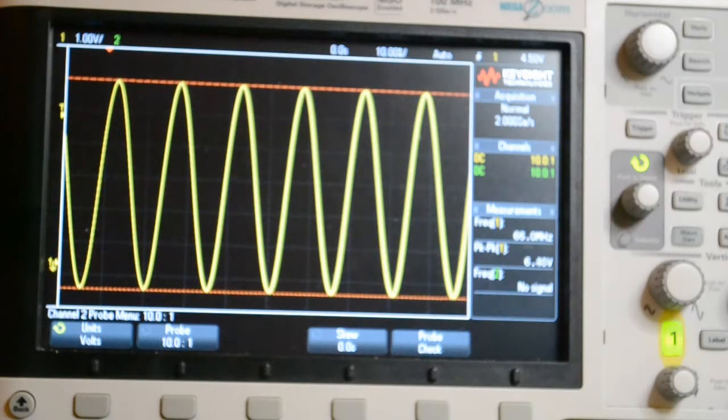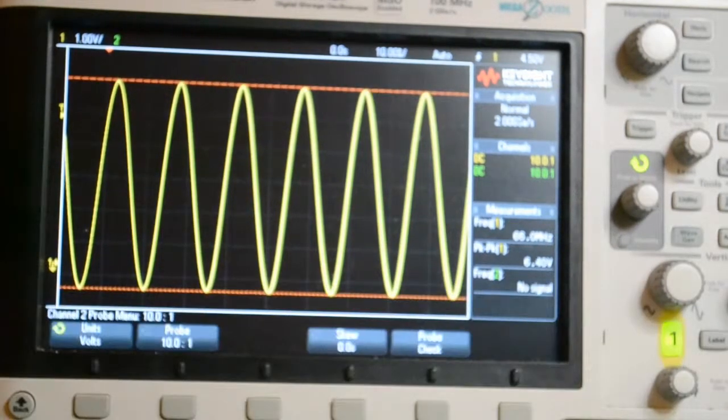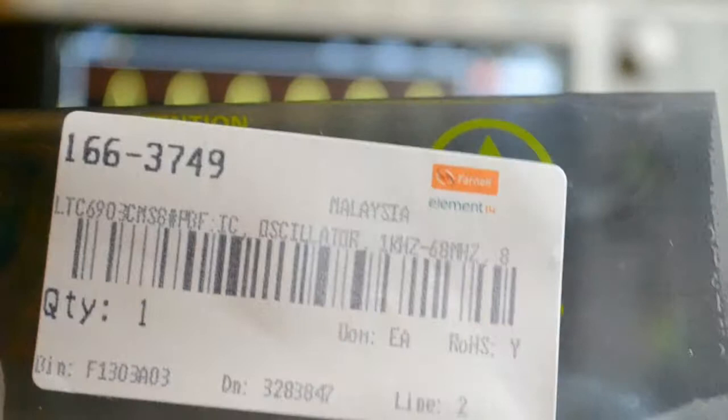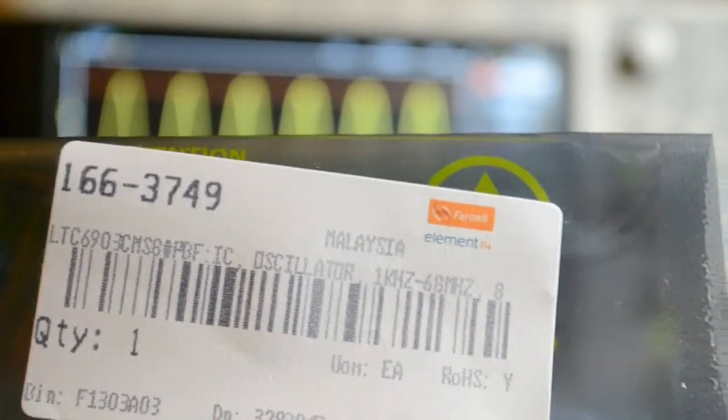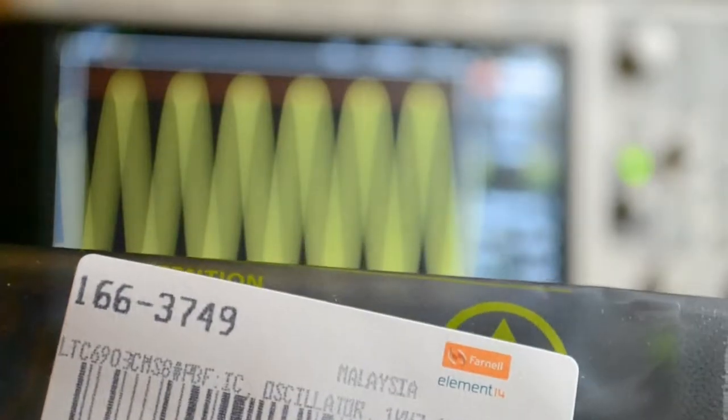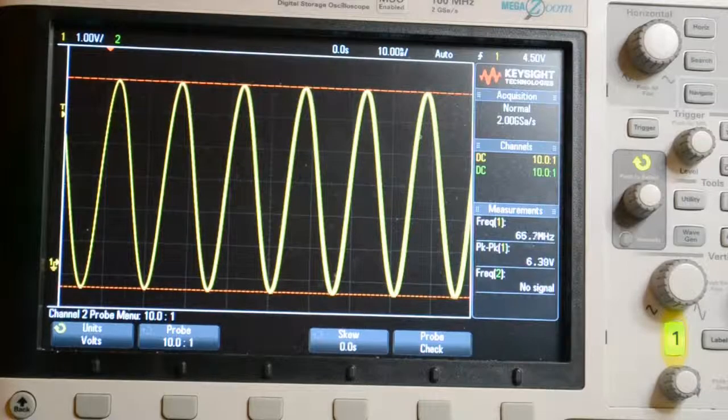Hopefully this has given you some insight into programmable oscillators, and PWM on microcontrollers, that sort of stuff, how to get certain frequencies. So just before I forget, the part number for that oscillator, 1663749, and you can see how I got it from Farnell Element 14 in Leeds. Thank you very much.